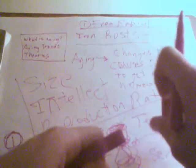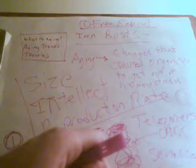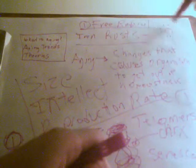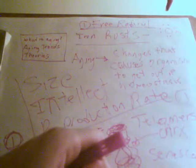Another important theory is the free radical theory of aging. Free radicals are molecules or atoms with an unpaired electron — for example, oxygen, which has a valence shell of six electrons and needs two more, making it very reactive.